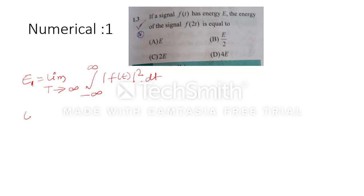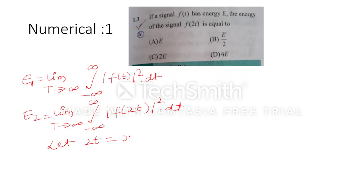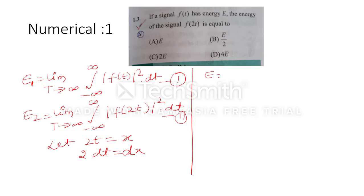We call the energy of F(2t) as E₂. So E₂ is equal to the limit from minus infinity to infinity of F(2t) whole squared dt. Let 2t equal to x, so 2 dt equals dx. Substituting into the second equation, E₂ equals the limit from minus infinity to infinity of F(x) whole squared dx by 2.